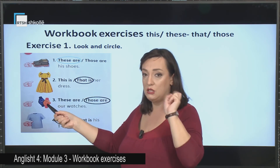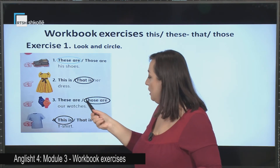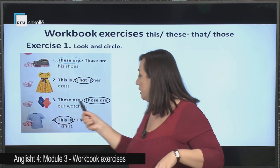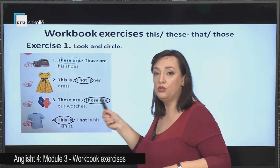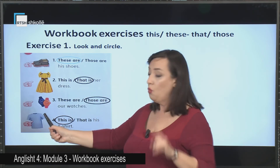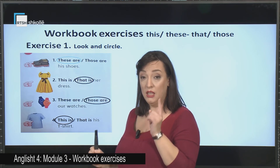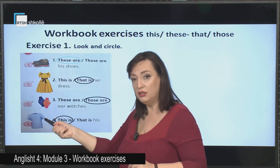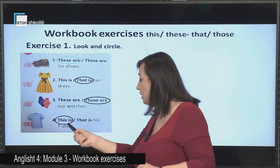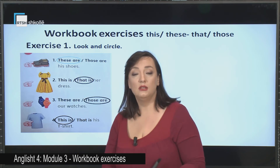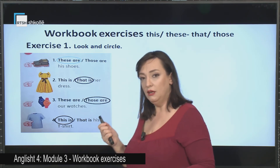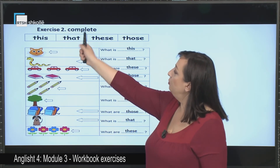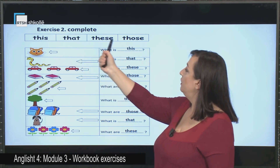Let's go on. Another exercise: complete using 'this,' 'that,' 'these,' or 'those.' Instead of a finger we now have an arrow. We have one object and the arrow is near — singular, near — so: 'This.' The snake is far — 'What is that?' — 'That.' How many cars? Three — plural. Look at the arrow: near — so 'What are these?' Two books far in the distance — 'What are those?' Five pencils, plural, near — 'What are these?'